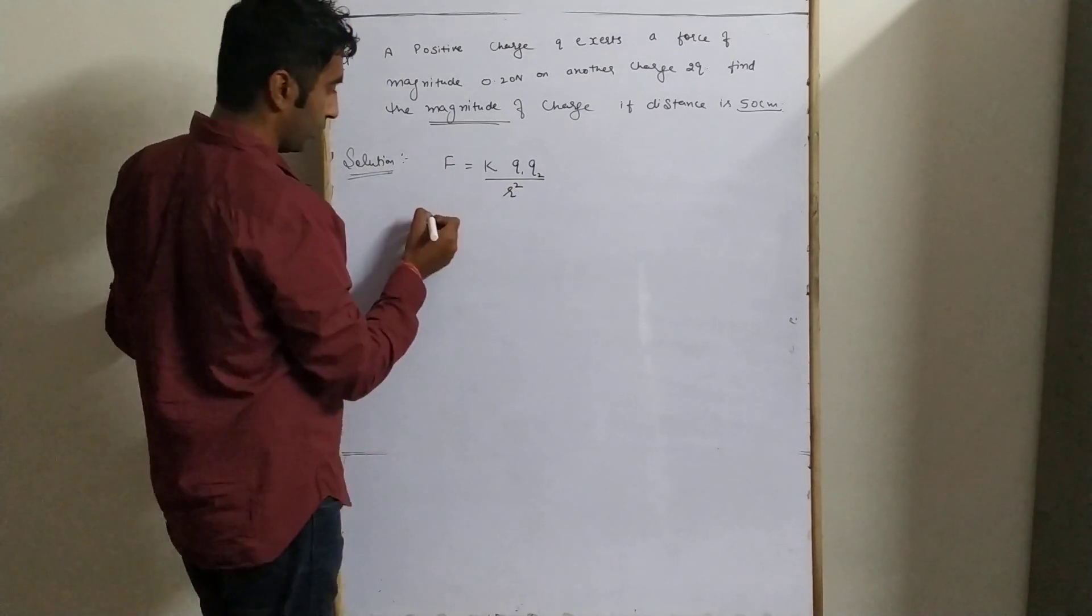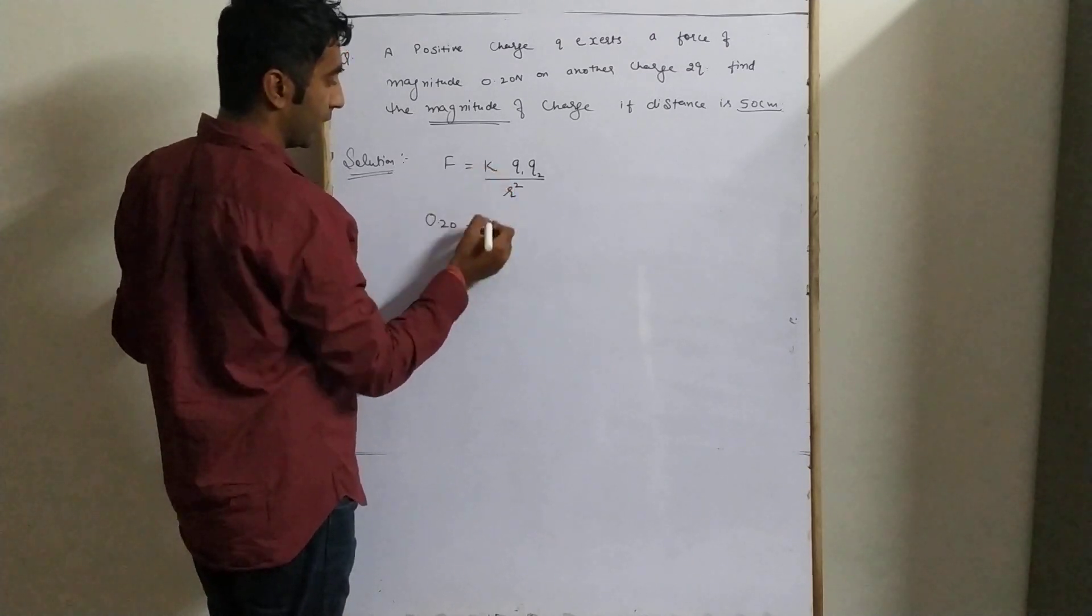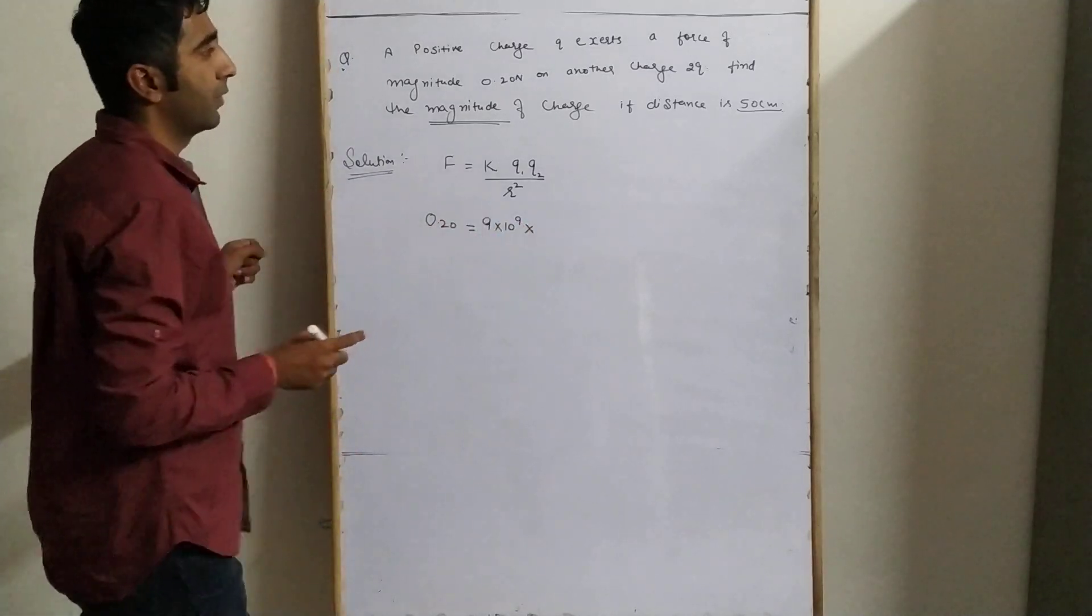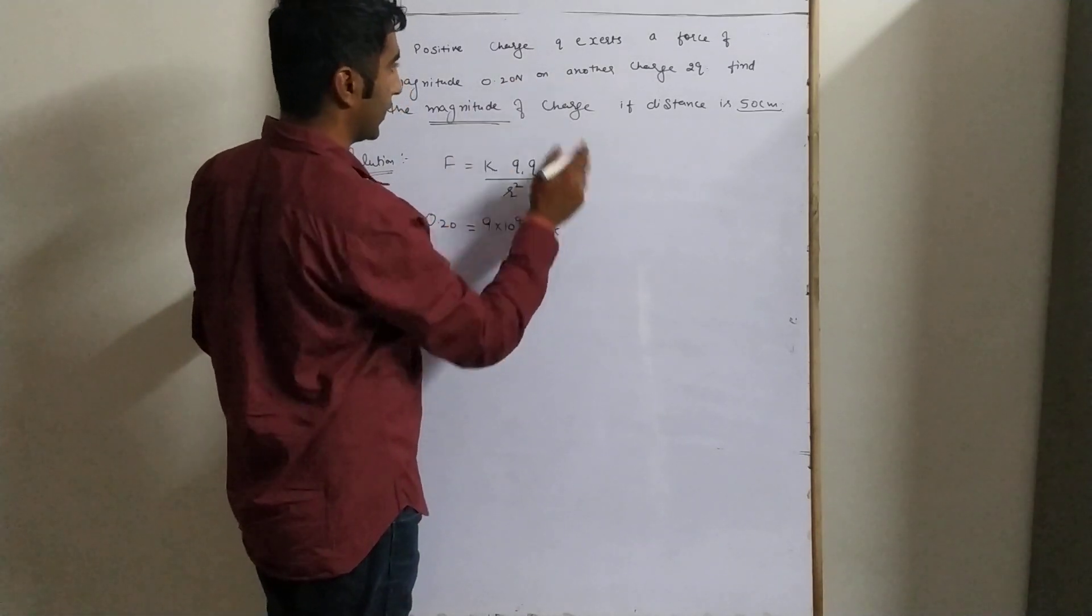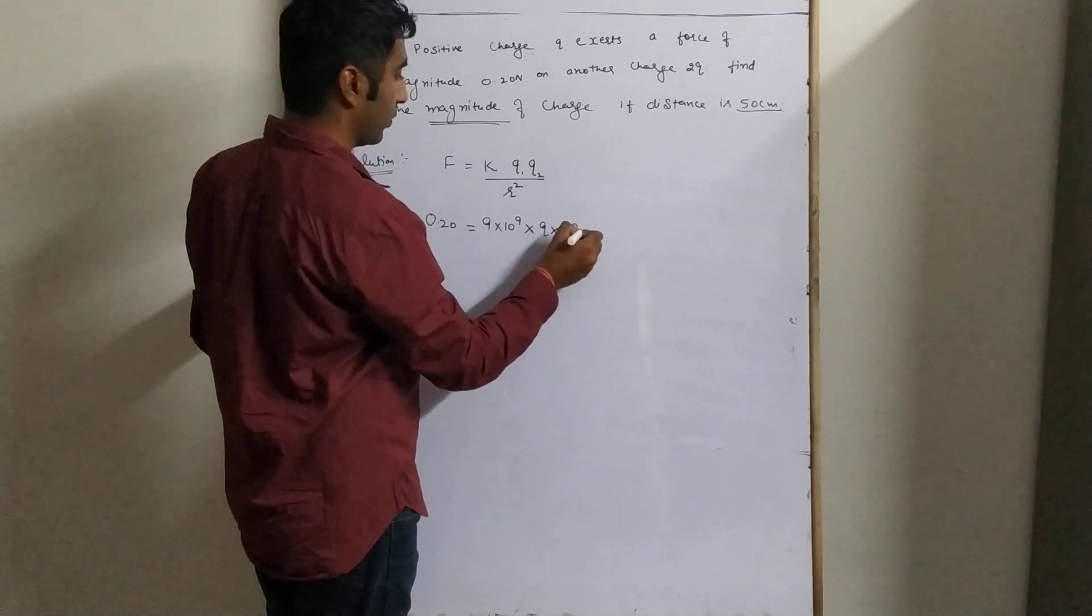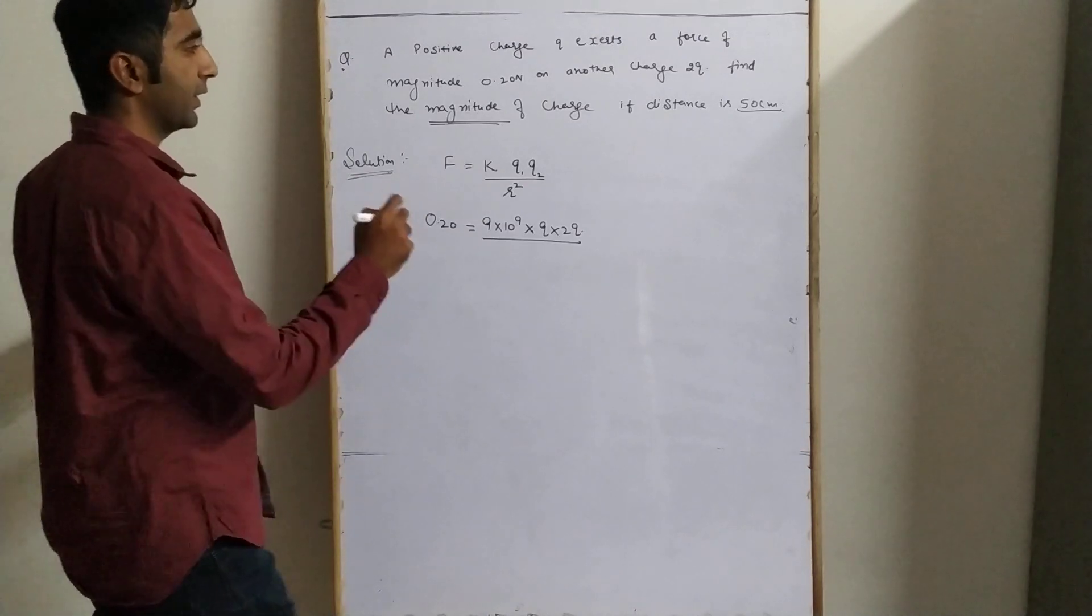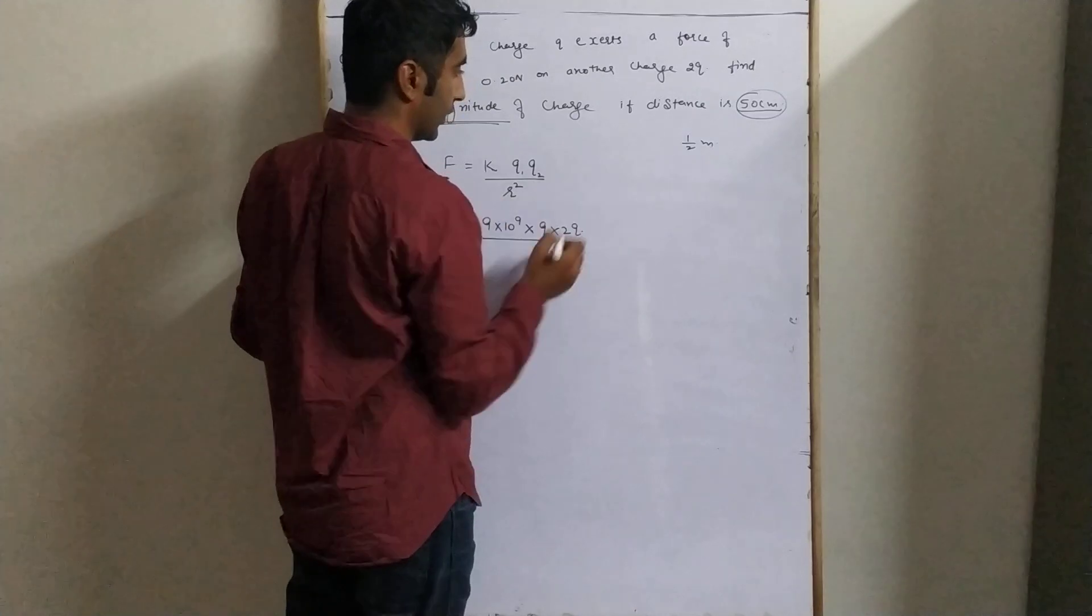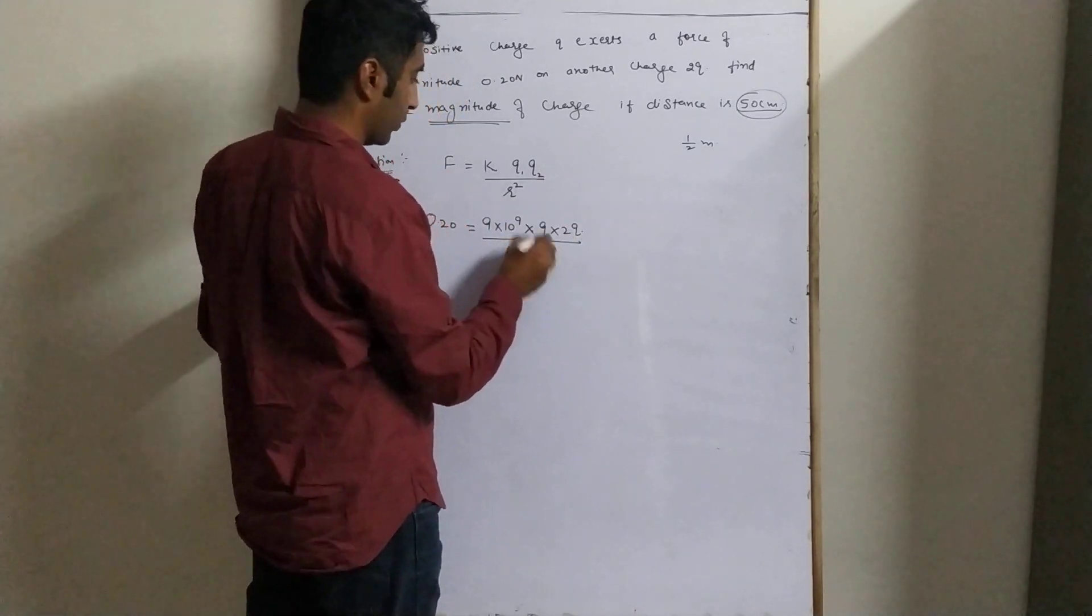Force is 0.2, k is 9×10⁹. One charge is q, the other charge is 2q, divided by distance which is 50 cm, means 1/2 meter. So (1/2)² in the denominator.